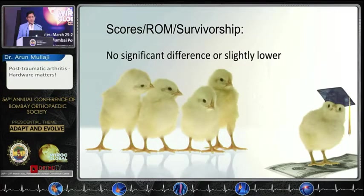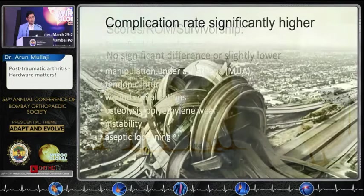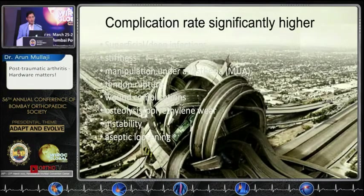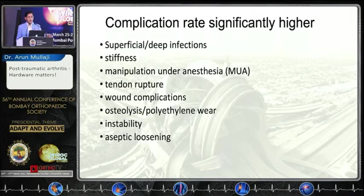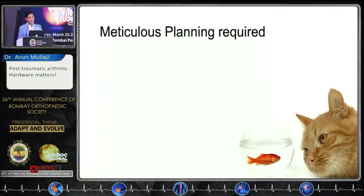In terms of scores, range of motion, and survivorship, there's no significant difference with standard total knees, or it could be slightly lower, and you need to warn your patients. However, the complication rates are significantly higher and include infection, stiffness, the need for MUA, ruptures of tendons, and wound complications. On a longer-term basis, osteolysis, polyethylene wear, instability, and loosening can occur.